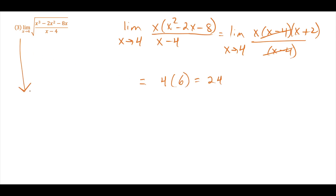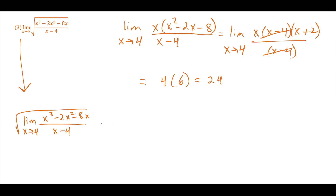To apply the theorem, the limit equals the square root of the limit as x approaches 4 of (x³ − 2x² − 8x)/(x − 4). We already evaluated that inside limit — it equals 24 — so our solution is the square root of 24. This simplifies: √24 = √4 · √6 = 2√6.